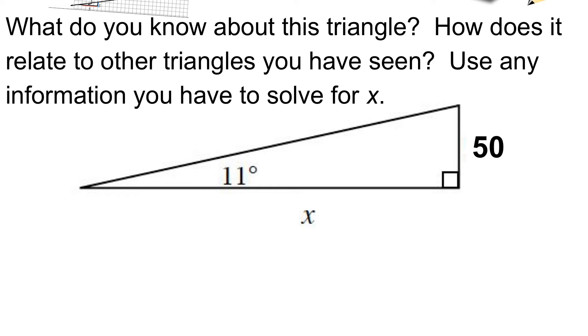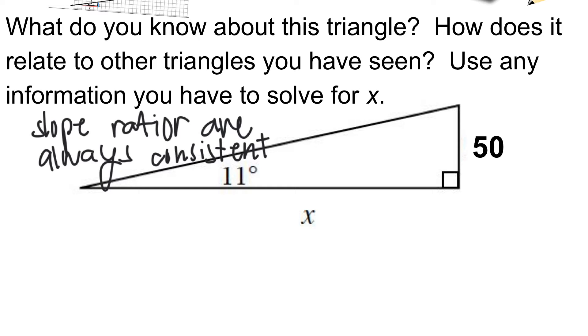Now if you remember correctly, I did tell you that slope ratios are always going to be consistent. What I mean by that is that they're always going to be the same if you have a triangle with the hypotenuses on the same line - you're always going to have the same thing.